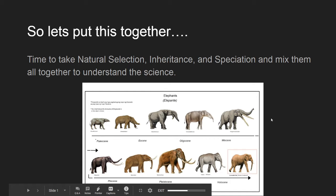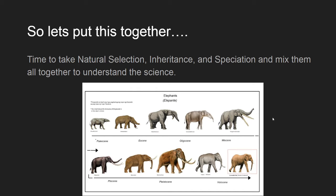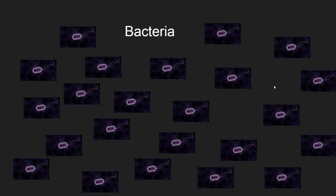I decided the best way to show you the example and hopefully make all of this more concrete would be to go through something that everybody's aware of. We could go through the evolutionary path of an elephant and try to determine how the gene pool is changing, how the alleles are changing due to natural selection, but let's get into something a little bit more direct.